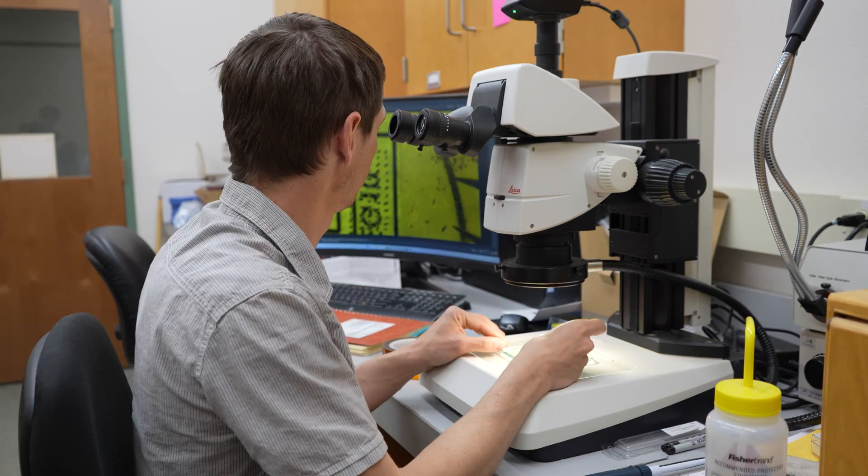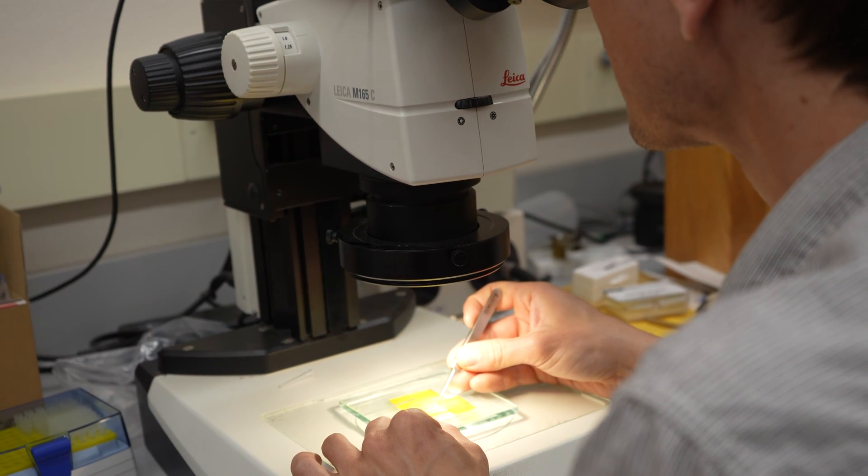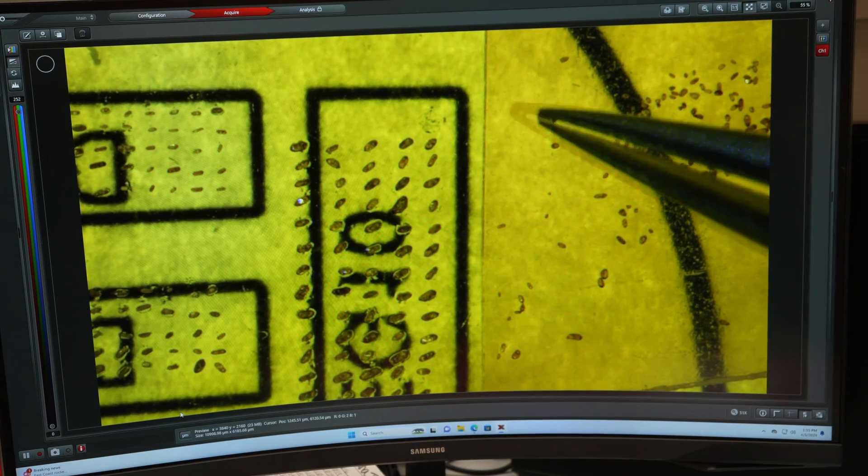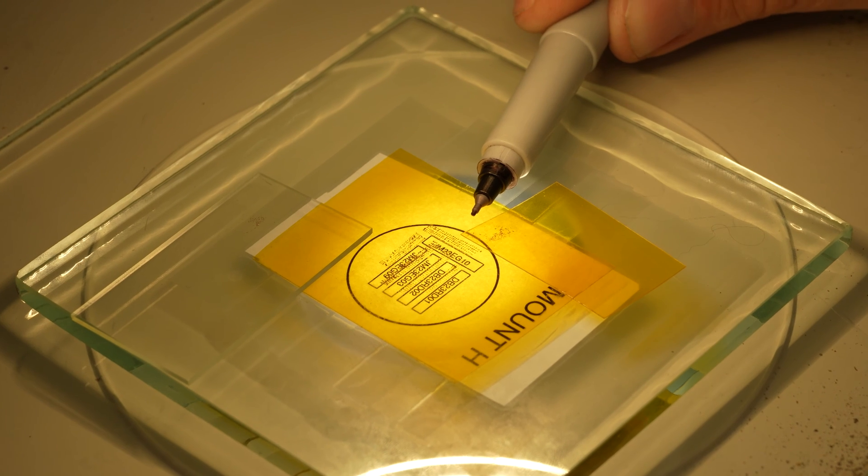Now under a microscope, we handpick individual zircon grains, finding them based on their shape and transparent glassy appearance. By placing them on grids, we can prepare many samples on the same mount for further analysis.